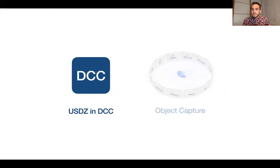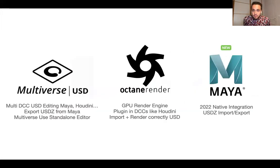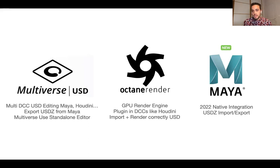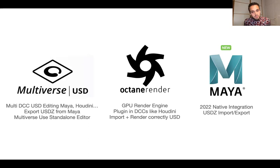Basically they put the spotlight on three tools. They mentioned Multiverse USD, which allows you to edit USDZ files in Maya or Houdini, export USDZ from Maya, and also use it as a standalone editor for USD files. They also mentioned Octane Render — a GPU render engine you can plug into DCCs like Houdini — that allows you to import and render USD correctly.